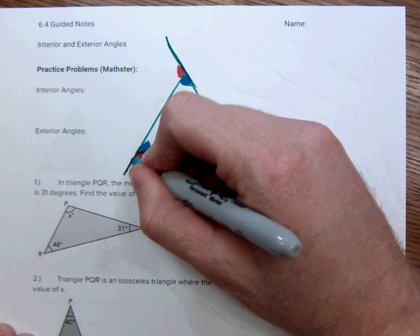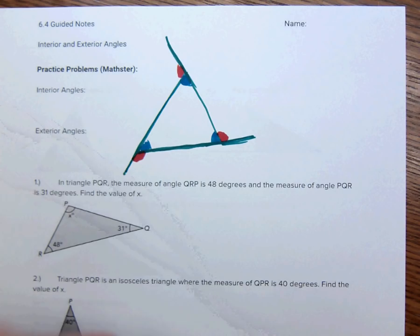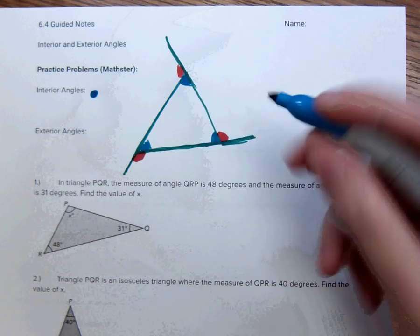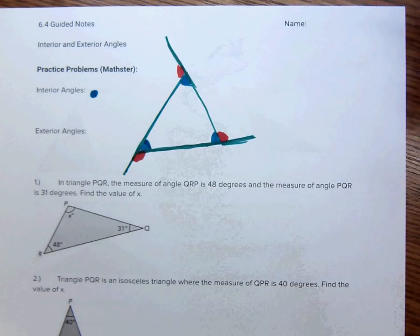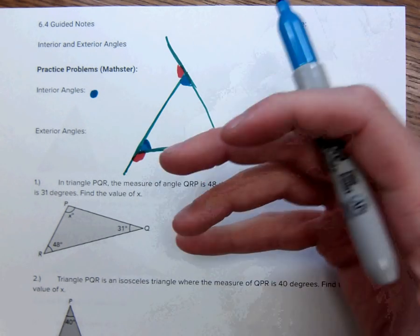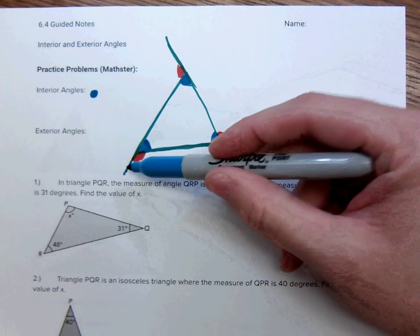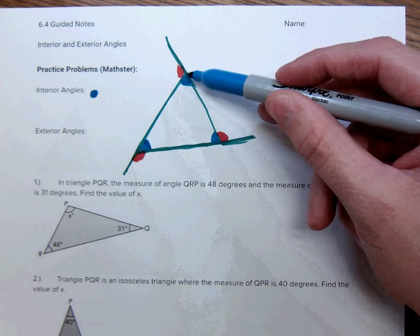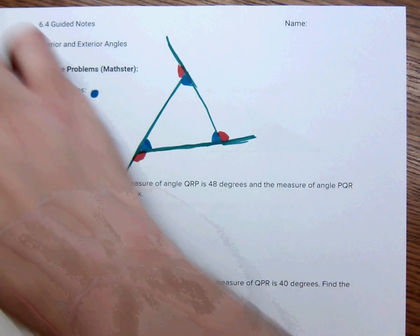We have interior, which are the blue, the angles inside of a shape. And we're really just working with triangles. But that goes for anything. Interior angles are inside. And exterior angles are angles that are made with the vertex of a polygon but they are outside of said polygon. Those are the red ones here.